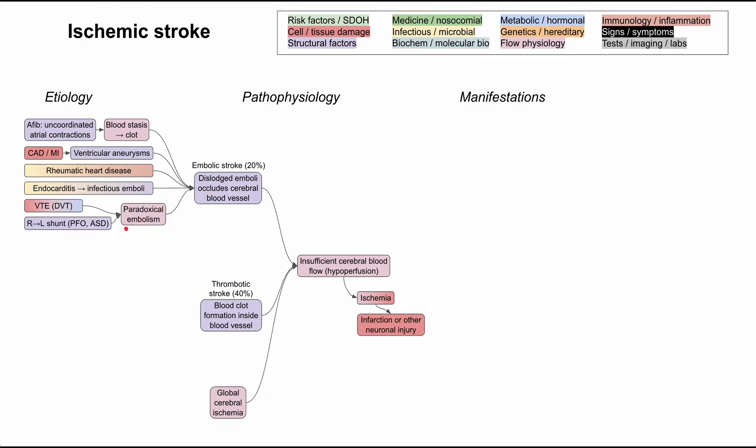Next is this paradoxical embolism, and you need two things for this to happen. You need a clot firstly in the venous side, so a venous thromboembolism, most commonly a deep vein thrombosis. And you also need a way for that venous clot to get to the arterial side of the vasculature, so that would be a right-to-left shunt.